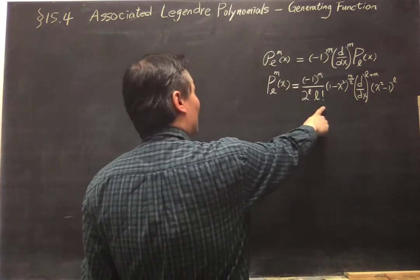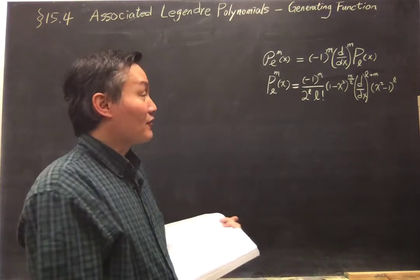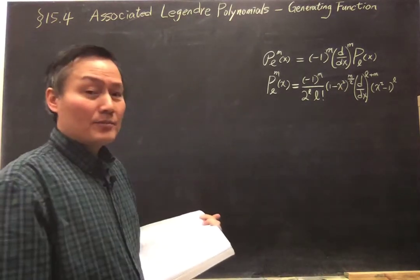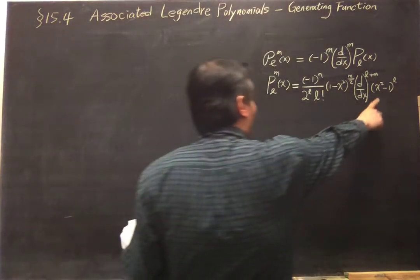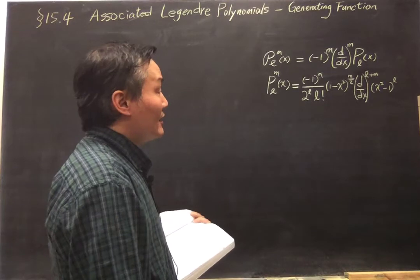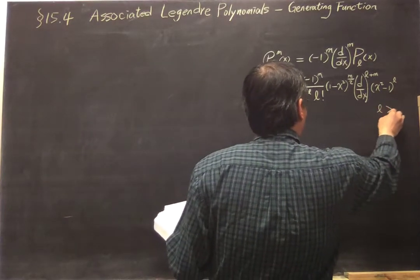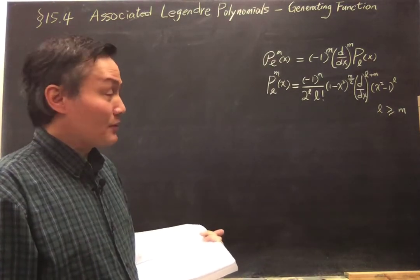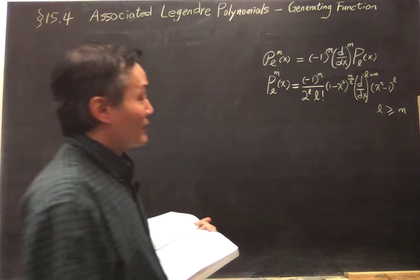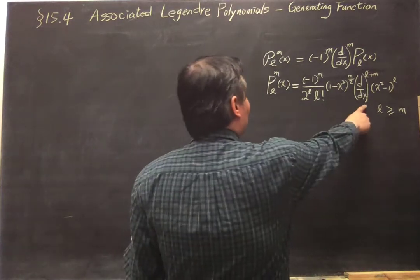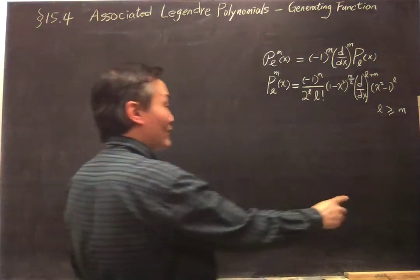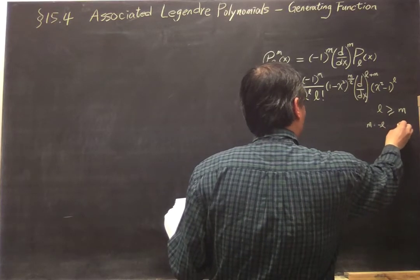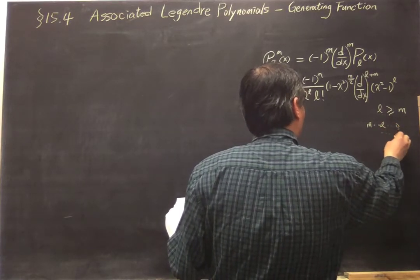Combining, we have this formula for the associated Legendre function, given by taking d/dx to the (l plus m) power of the factor (x squared minus 1) to the power l. There is a restriction: l must be greater than or equal to m. Also, m can take negative values, so m ranges from minus l all the way up to l.